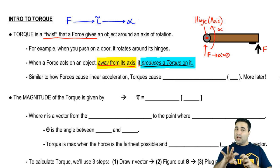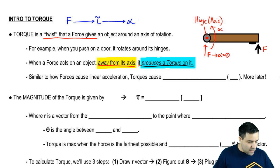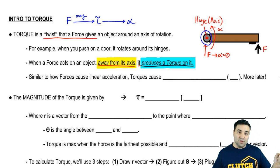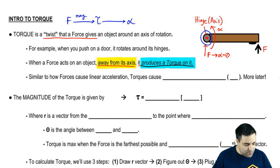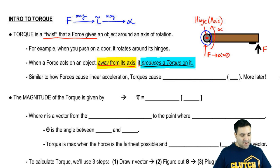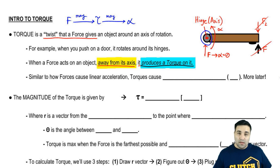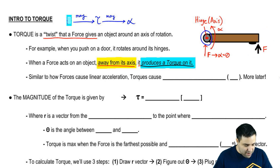You're not directly producing a torque — you're producing a force, which then results in a torque on that object. A force may or may not produce a torque. And a torque may or may not produce an angular acceleration. For example, if F1 is pushing one way but F2 cancels it out, there's no net result. The key sequence is: F produces torque, which produces alpha.